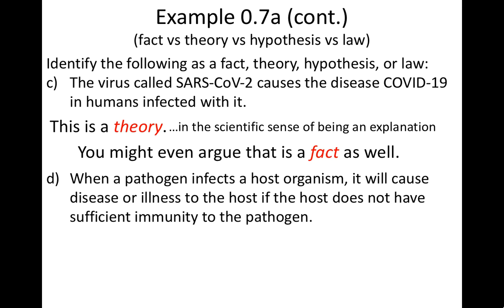In Part D, it states, when a pathogen infects a host organism, it will cause disease or illness to the host if the host does not have a sufficient immunity to the pathogen. This is a law. This statement describes a pattern that we see, but it doesn't offer any explanation. It describes what happens, but it does not explain why it happens.